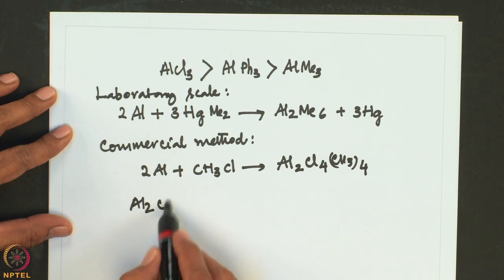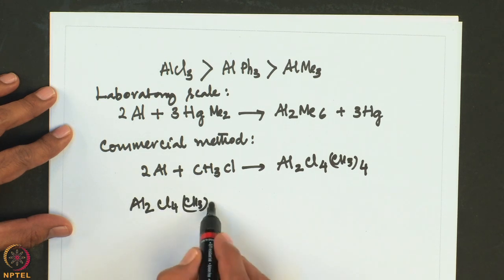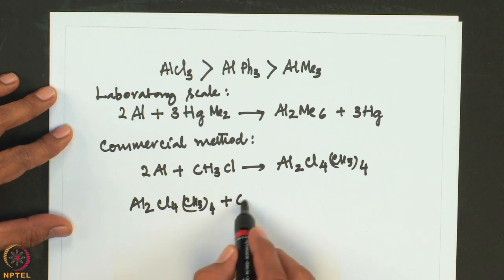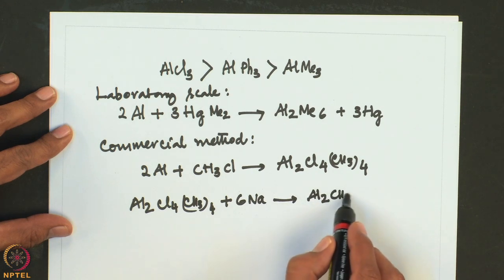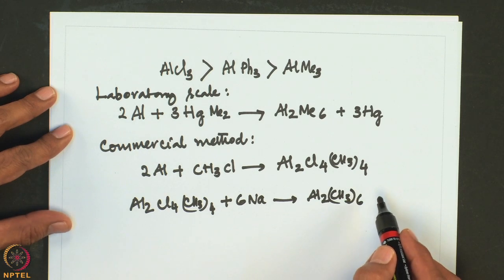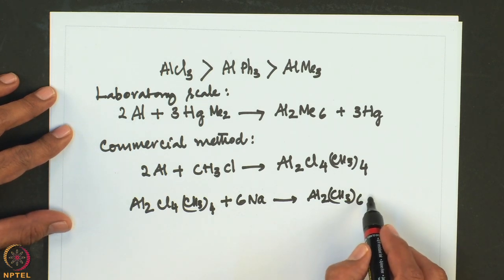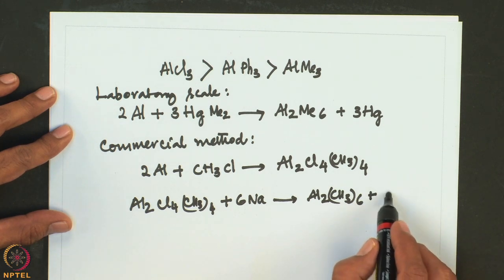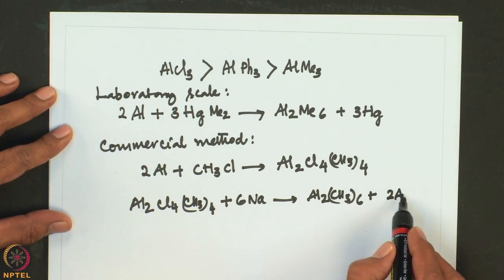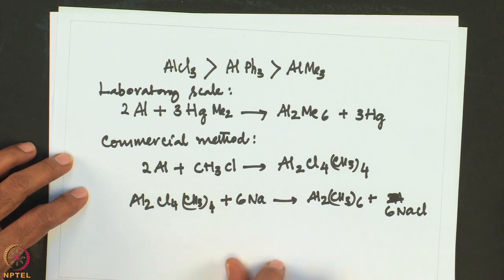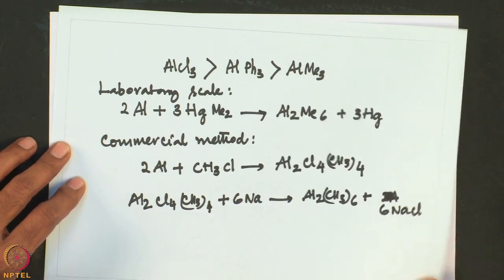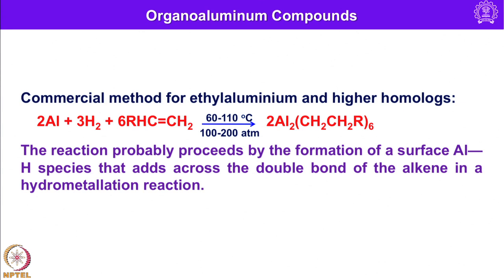When Al2Cl4(CH3)4 is reacted with 6 equivalents of sodium, Al2(CH3)6 is formed — that is, trimethyl aluminum — along with 2 equivalents of NaCl. Of course, these equations need to be properly balanced; one should be able to write the balanced equation in this case.